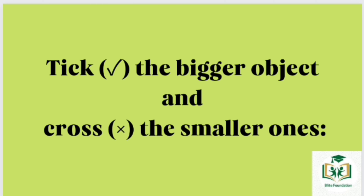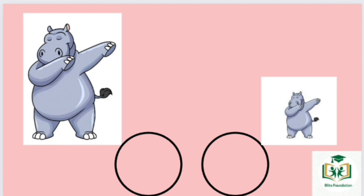Take the bigger object and cross the smaller ones. Left hippopotamus is the bigger one. Right hippopotamus is the smaller one.